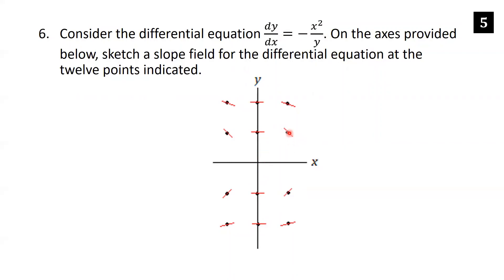At the point (1, 1), plugging in 1 squared over 1 gives dy/dx equals negative 1, so the slope is negative 1. At (1, 2), we get 1 squared over 2, so the slope is negative one half — a little closer to horizontal than negative 1, specifically halfway between that segment and the horizontal. You can plug in the other values to verify the remaining slopes are accurate.